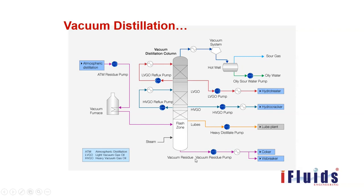We have to maintain a temperature gradient from bottom to top of the tower. Unless we remove some heat from the tower, we cannot maintain that temperature gradient. For that we use circulating reflux — it is also called pump arounds. Different people use different names, but both refer to the same thing. So LVGO circulating reflux as well as HVGO circulating reflux are used. At the draw trays, these products are drawn and sent to downstream units for further processing. Mostly LVGO and HVGO are mixed together and called VGO — vacuum gas oil — which is feedstock for the FCCU or hydrocracker unit.